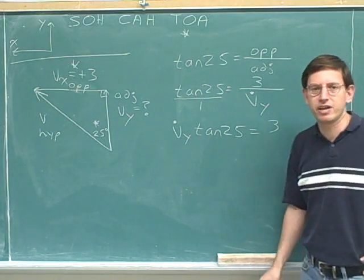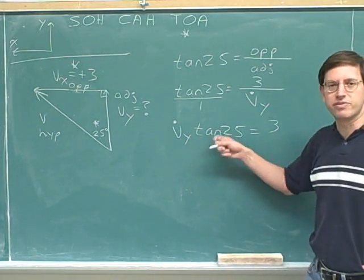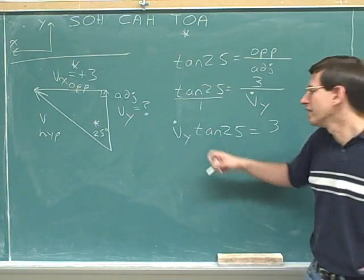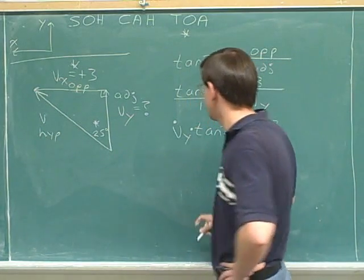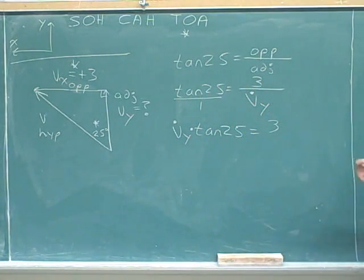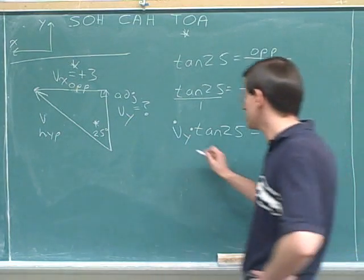How do we get rid of this tangent 25 term? Well, not by doing an inverse tangent. That would just give us a mess. How is this tangent connected to the v_y? It's connected via multiplication, right? This is v_y times the tangent of 25. So we do the opposite. The opposite of multiplication is division.